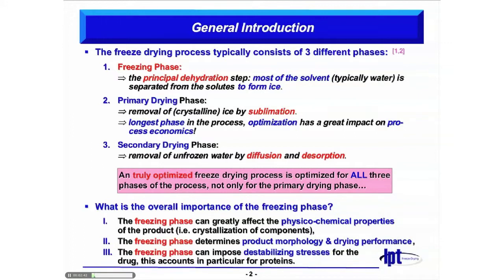First, as a recall, the freeze-drying process itself typically consists of three different phases. The first phase is the freezing phase. It's the principal dehydration step, where most of the solvent, which is typically water, is separated from the solutes to form ice.